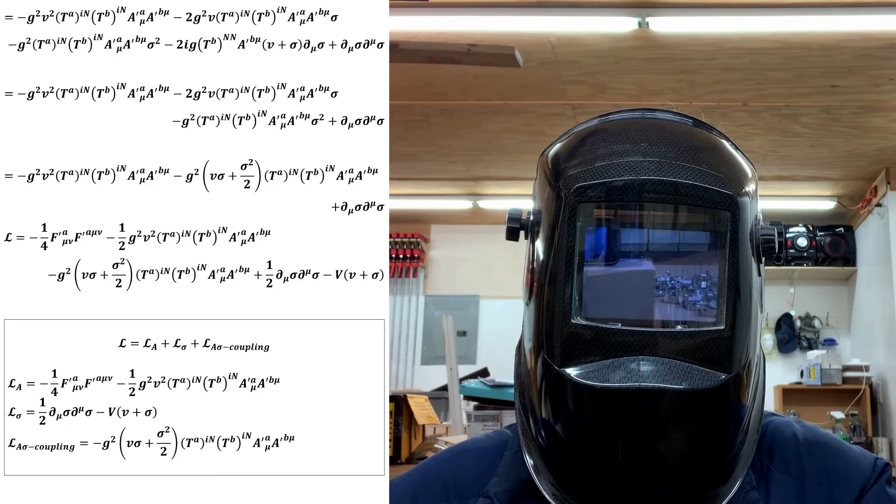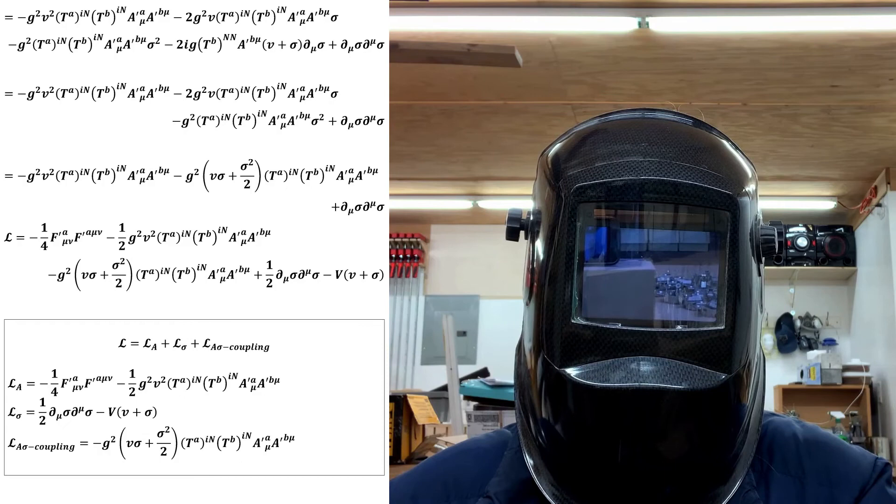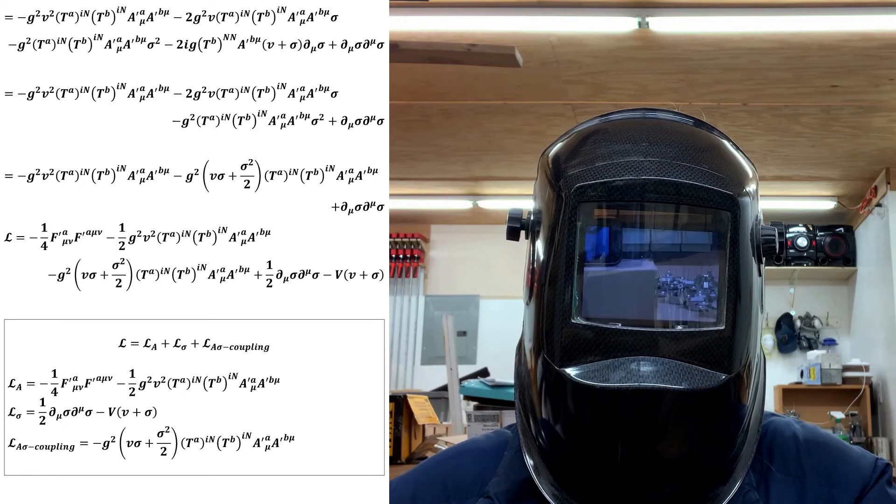As a result, we have a theory with m massless vector fields and n minus m massive ones. We've therefore verified that the Higgs mechanism, according to the Goldstone theorem, works for a general orthogonal Yang-Mills theory.